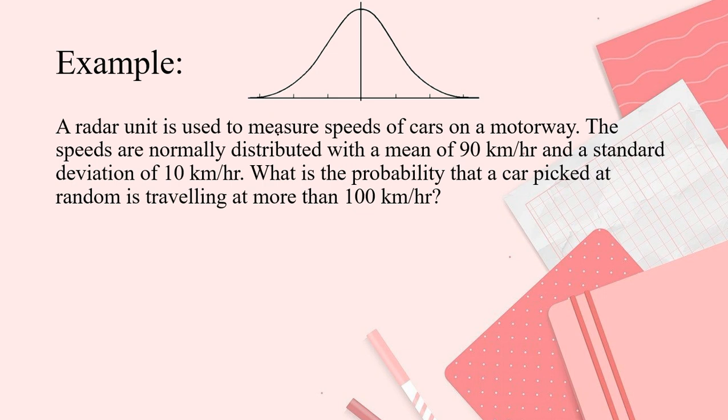So, let's do it. The speeds are normal distribution with the mean. There's the mean which is 90. Let's also write the given. Next, standard deviation is 10. When we say standard deviation is 10, meaning going down, minus 10. Going up, plus 10. So, this is 80, this is 70, this is 60, and so on. This is 100, 110, 120, and so on. Because 10 is the SD.